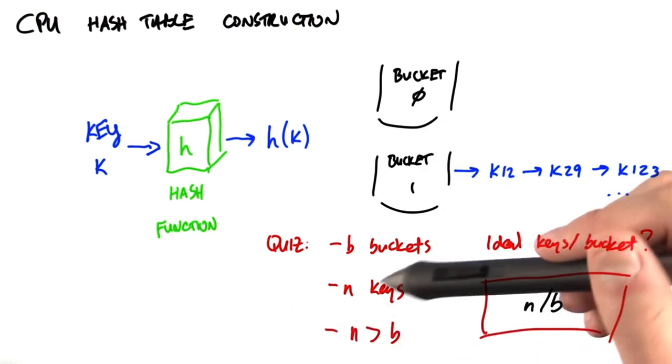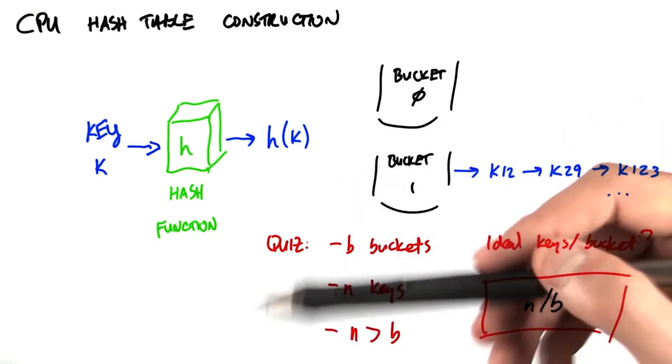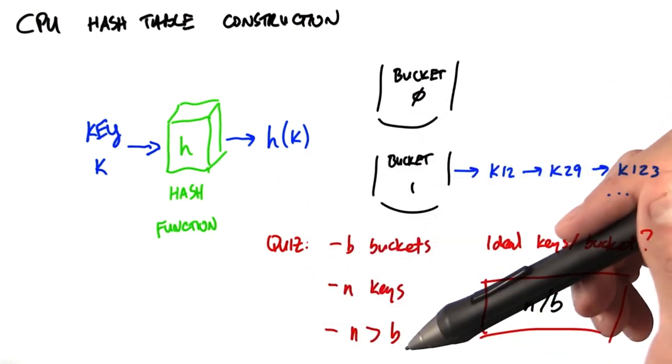Ideally, a hash function distributes all input keys evenly across buckets, so every bucket ends up with roughly the same number of items.